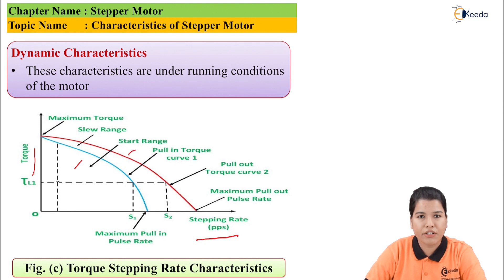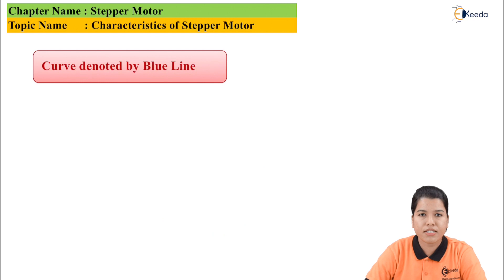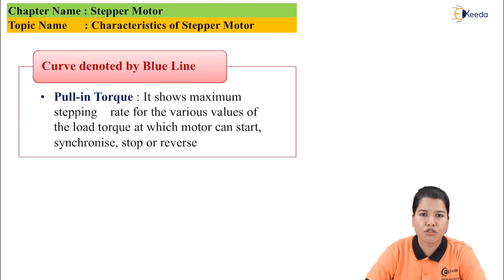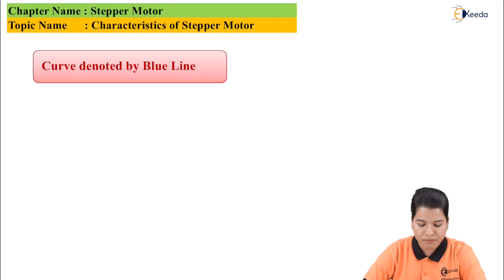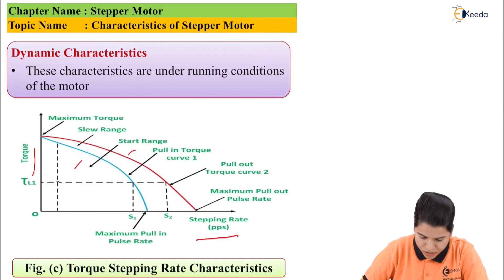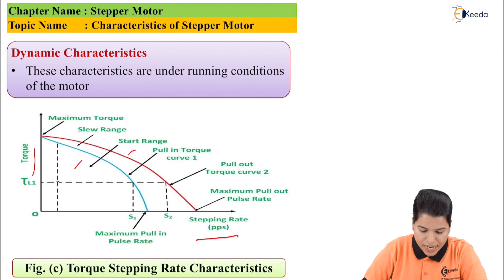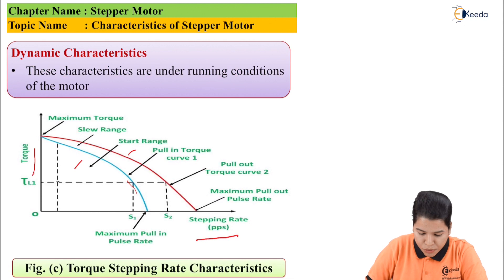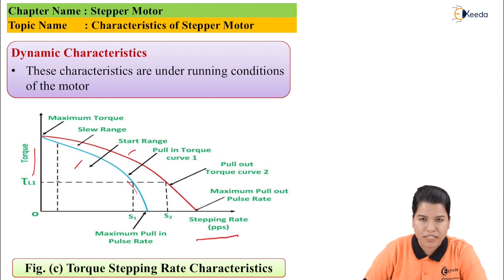Now let us see the significance of these curves. The curve denoted by the blue line is called pull-in torque. Pull-in torque represents the maximum value of torque at which the motor can start, stop, synchronize, or reverse. This blue curve denotes the pull-in torque, and at this value the motor can start, stop, synchronize, or reverse up to the maximum pulse rate S1.